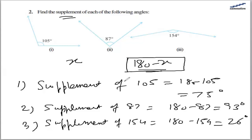So this is how we find the value of the supplement: by subtracting the angle from 180 degrees.